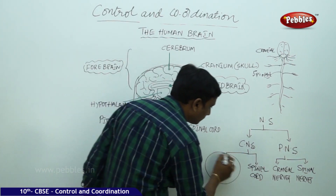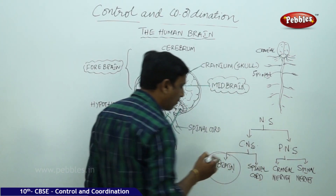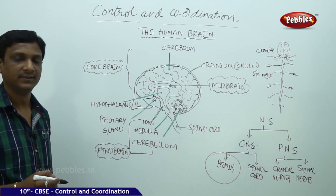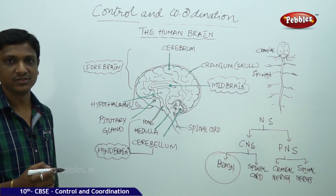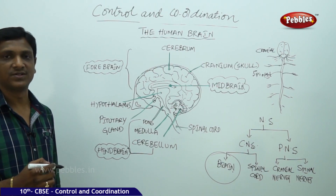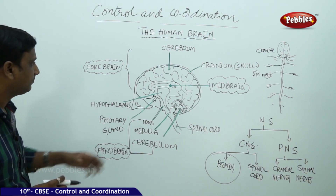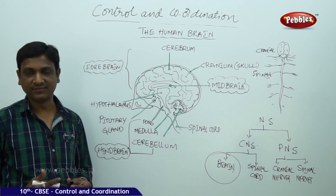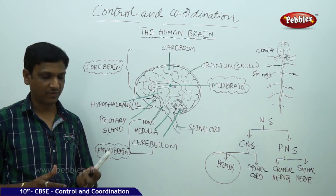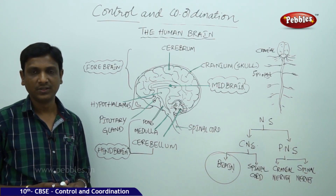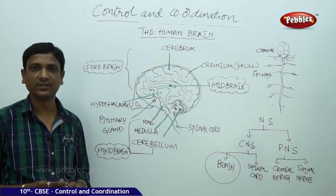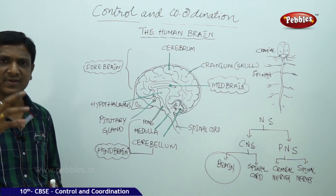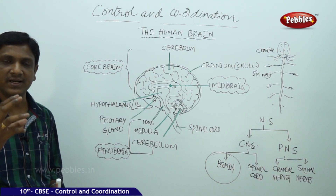Now we focus on the brain within the Central Nervous System. The brain is an important organ of the nervous system, which is made up of very soft tissue comprising a lot of water. Most of our brain is made up of water, making it a very sensitive and delicate organ.